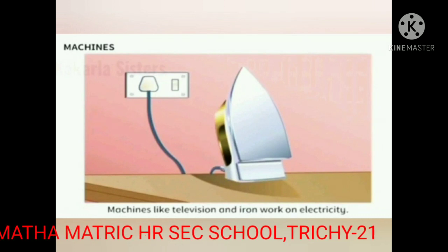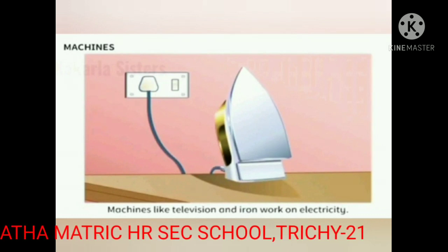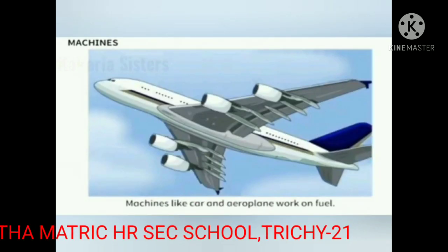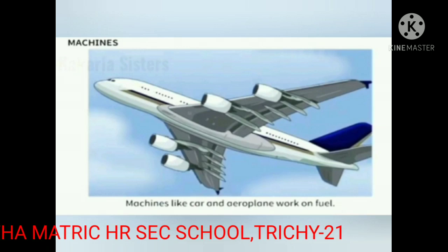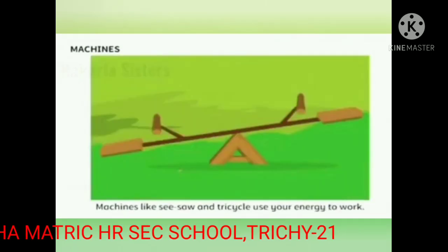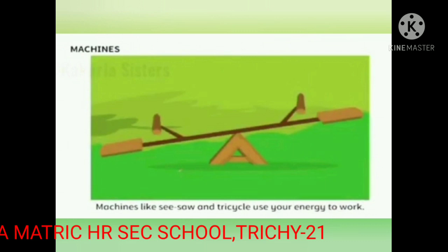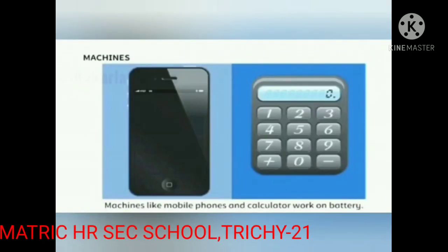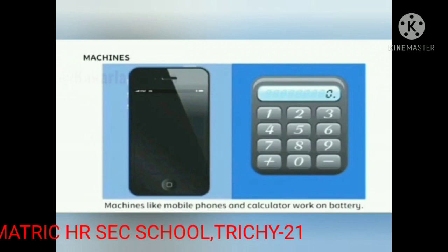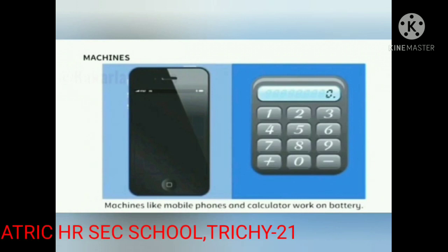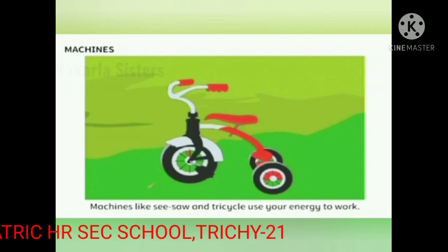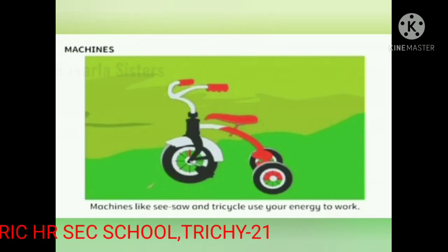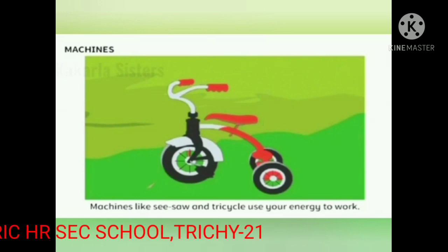Machines like television and iron work on electricity. Machines like car and aeroplane work on fuel. Machines like seesaw and tricycle use your energy to work. Machines like mobile phones and calculator work on battery.